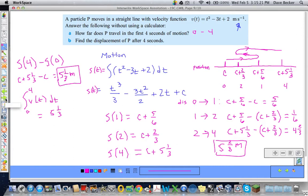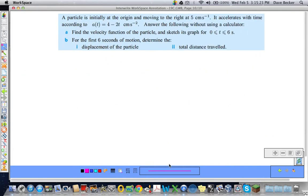So one more example and we will be done with talking about kinematics. A particle is initially at the origin and moving to the right at 5 centimeters per second. It accelerates with time according to A(t) equals 4 minus 2t. Answer the following without using a calculator. So let's think about this—it's initially at the origin and moving to the right at 5 centimeters per second.